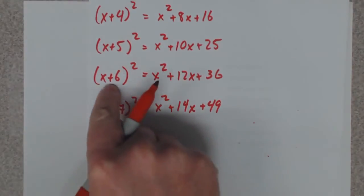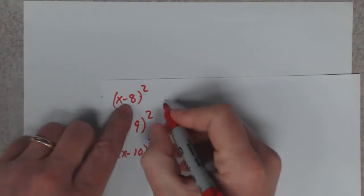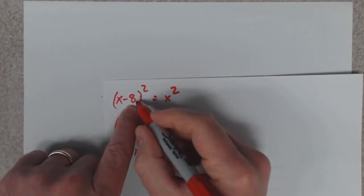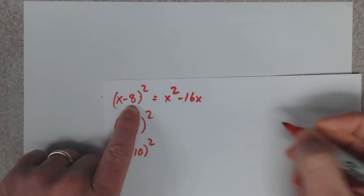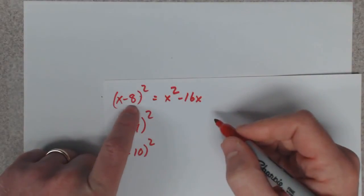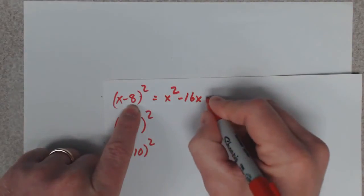Now you might think, well what if that's a negative, what happens then? I got you covered. It's automatically x squared, you double it. What's negative 8 and negative 8 is negative 16x. If that's a negative, that's a negative there. If you square any negative number, it's automatically positive.